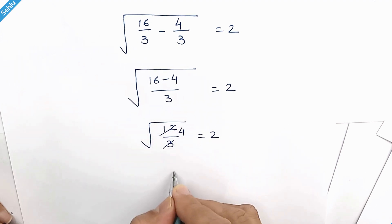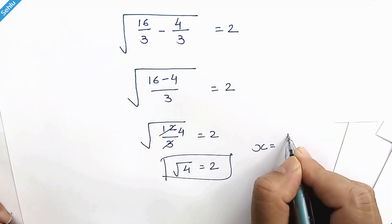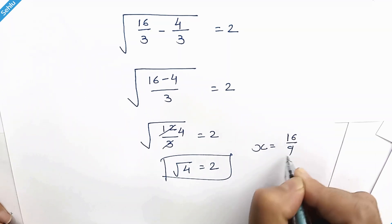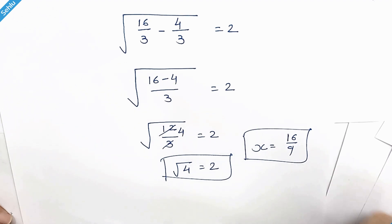Here we have 4, so square root of 4 is 2. So x equals 16 over 9 is the correct answer. Thanks for watching, don't forget to subscribe, see you in the next one, bye bye!